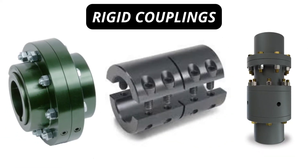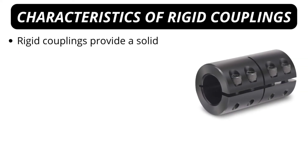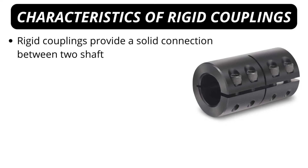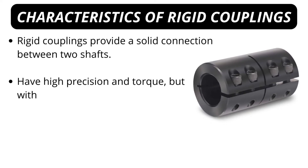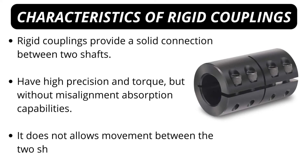Rigid couplings permit neither axial nor radial relative motion between the shafts of the driver and driven unit. Rigid couplings are primarily used for vertical applications such as vertical pumps. Characteristics of rigid couplings: they provide a solid connection between two shafts, have high precision and torque, but without misalignment absorption capabilities. They do not allow movement between the two shafts and require lubrication in many cases.